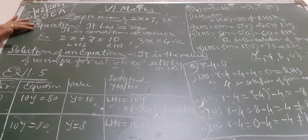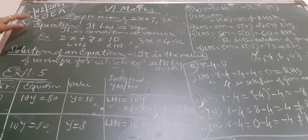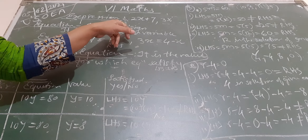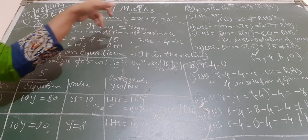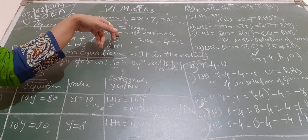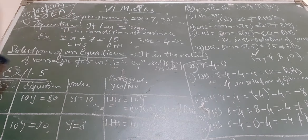Now we are going to see equation. What is an equation? If there is a condition on the variable, that is called an equation. An equation must have an equal to sign. The condition should be on the variable and it should have the equal to sign — that is called an equation.